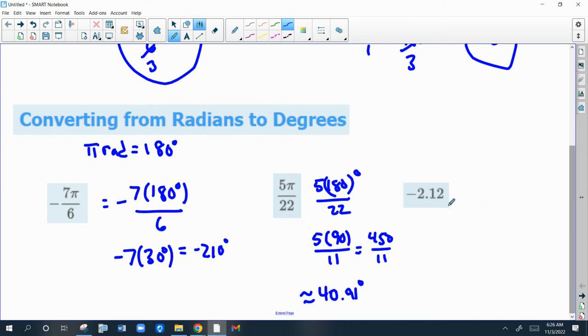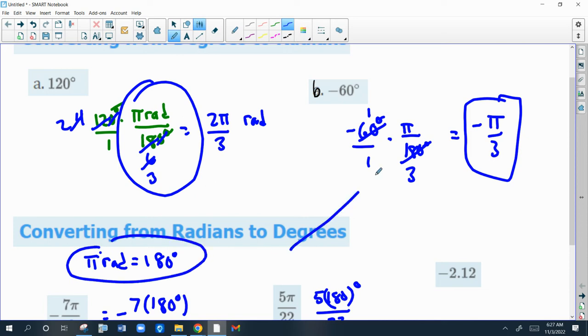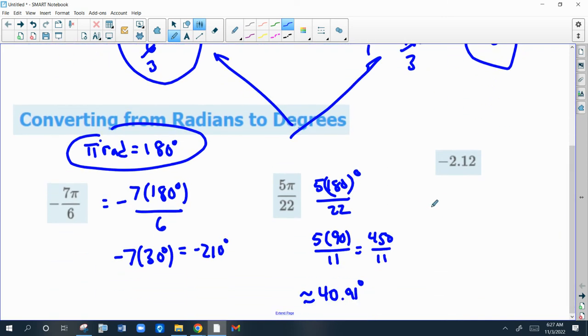Last one, negative 2.12. Notice this one does not have a pi, so there's nothing to substitute 180 in for. So I'm going to have to use the conversion factor again. Now I'm going to set up this conversion factor completely opposite, because I'm going the other way. Remember, this is radians, and you want your answer to be in degrees. So the 180 degrees has to go on top, so your answer ends up being degrees.